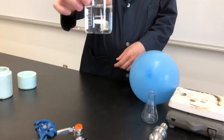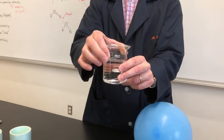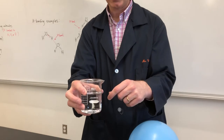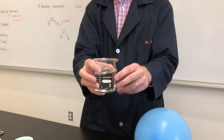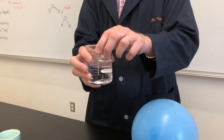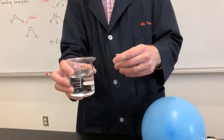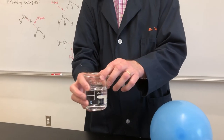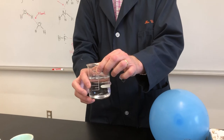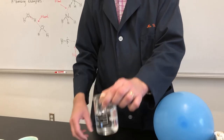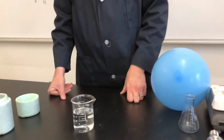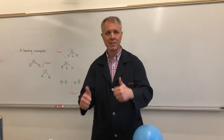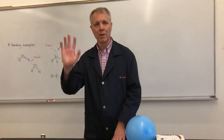Hydrogen bonding is one of the things that causes water to clump together in the liquid phase at room temperature. Water is really special in this way — hydrogen bonding gives it many unusual and important properties. Thanks, that was the end of my first video for our distance learning. Hope everyone's doing well, bye.